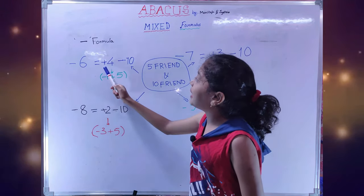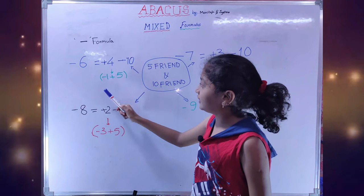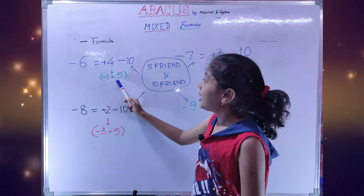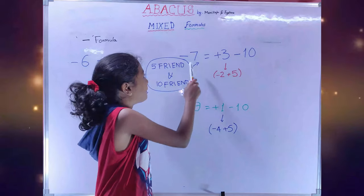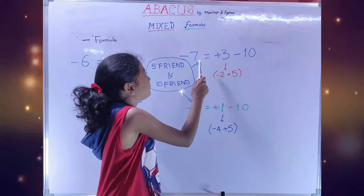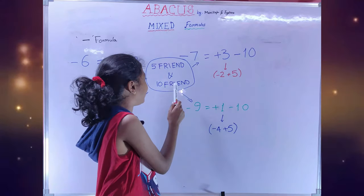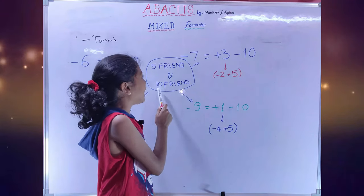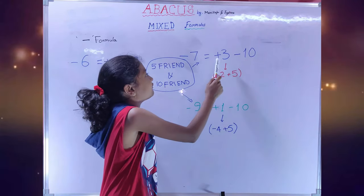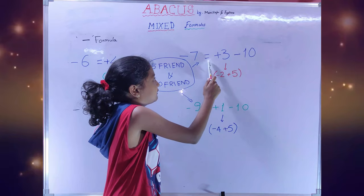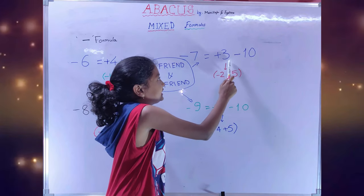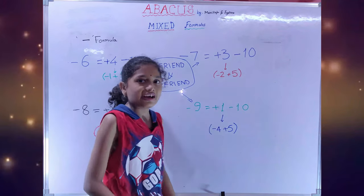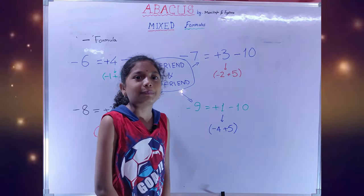5 friends: plus 4 is equal to minus 1 plus 5. To subtract minus 7, we are going to use 10 friends. 10 friends: minus 7 is equal to plus 3 minus 10.